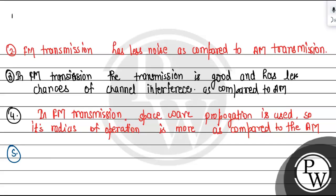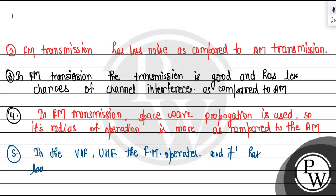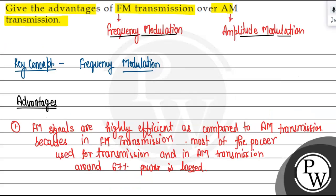The fifth advantage: FM operates in the Very High Frequency or Ultra High Frequency band, and it has less noise as compared to the High Frequency bands where Amplitude Modulation operates. So this is the answer for this question. I hope you understand it well. Best of luck. Thank you.